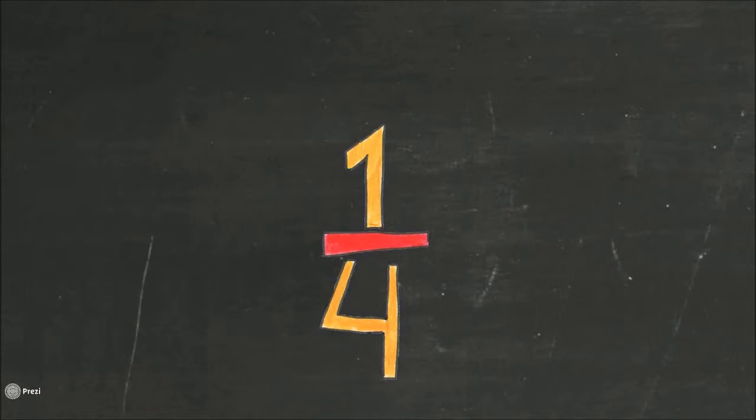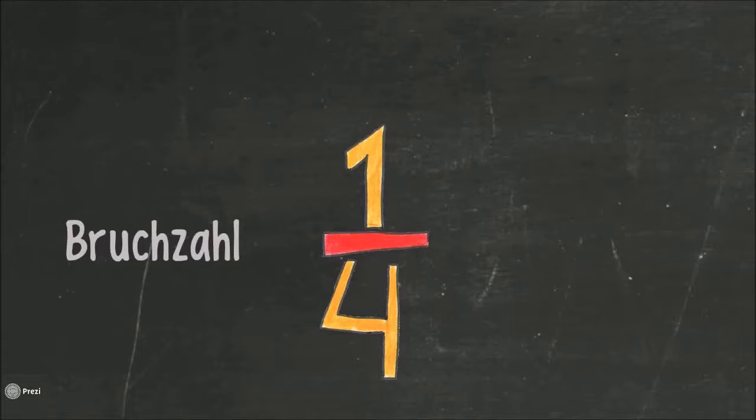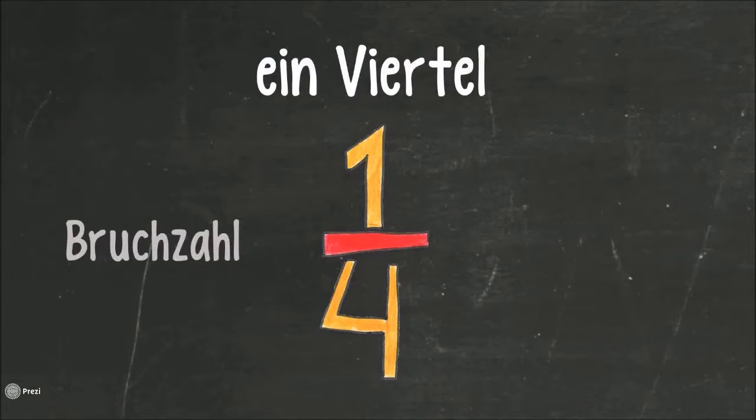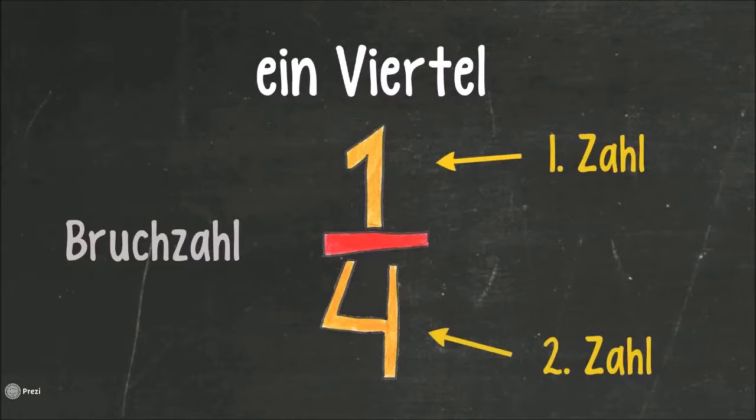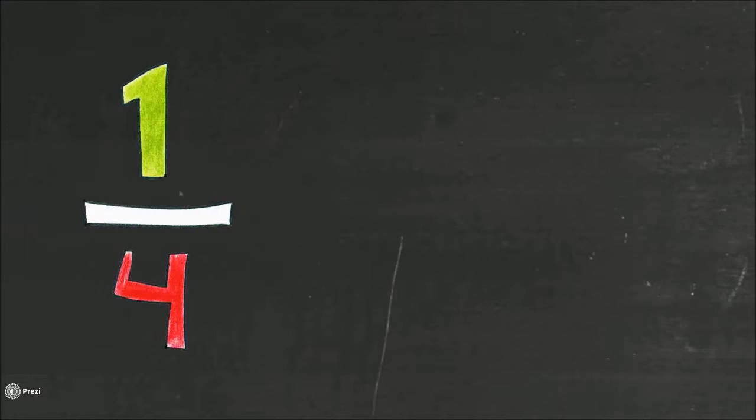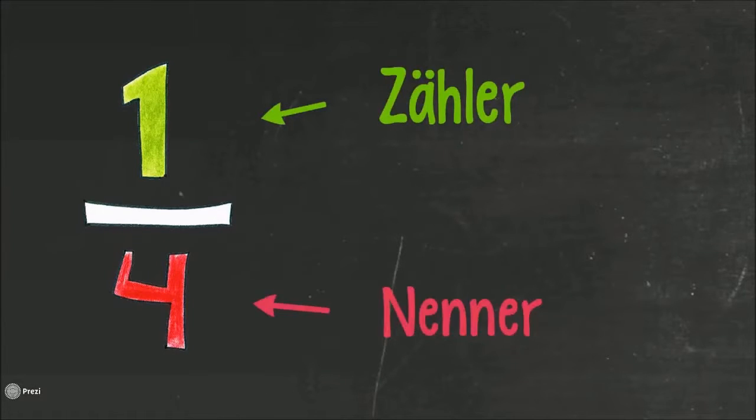This number is called a fraction. And this specific one is called a quarter. Strictly speaking, a fraction isn't just one number, but two separated by a line. The number above the line is called the numerator. The one below is called the denominator. And the line is called fraction bar.